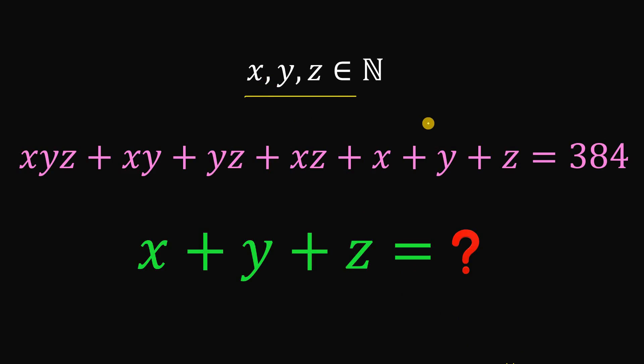Given that x, y, and z are both natural numbers that satisfies this equation: xyz plus xy plus yz plus xz plus x plus y plus z equals 384, then the goal in this question is to find the sum of x, y, and z.